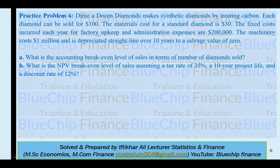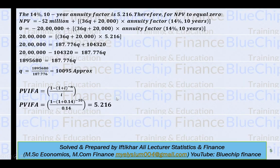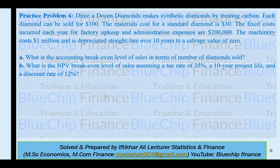The next question is a practice problem from your book. Diamond Dozen makes synthetic diamonds by treating carbon. Each diamond can be sold for $100. The material cost for a standard diamond is $30. Fixed costs each year are $200,000. The machinery costs $1 million, depreciated straight line over 10 years to a salvage value of zero. Find the accounting and NPV break-even levels of sales, assuming a tax rate of 35%, 10-year project life, and a discount rate of 12%. Try to solve this question as it is similar to the previous one with only the data changed.